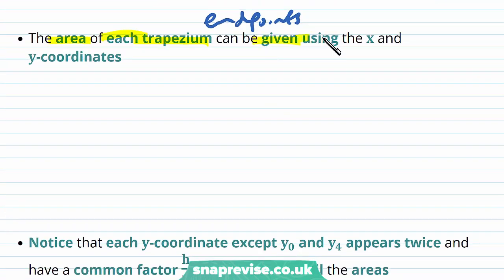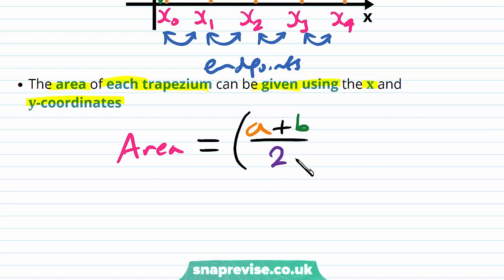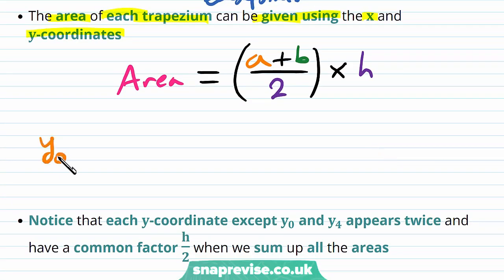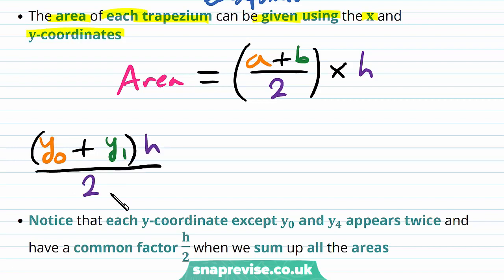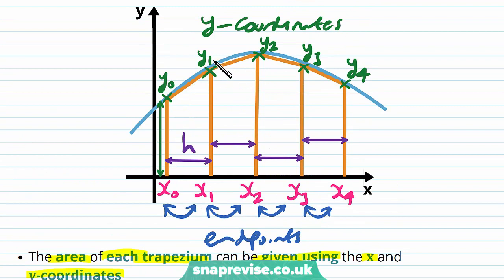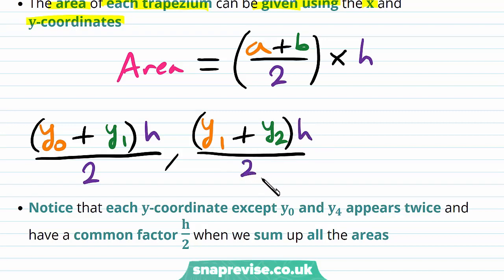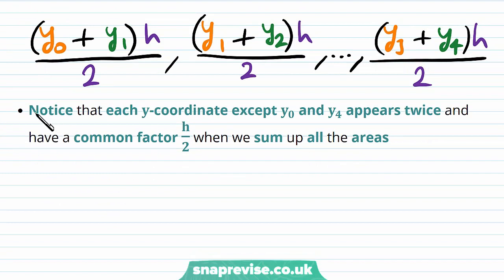The area of each trapezium can be given using the x and y-coordinates. In general, we find the area of a trapezium by adding the two lengths of the parallel sides, dividing by 2, then multiplying by the width h. This gives us (y0 plus y1) over 2 multiplied by h for the first trapezium. Then (y1 plus y2) multiplied by h over 2, and so on up to the last one: (y3 plus y4) multiplied by h over 2. Notice that each y-coordinate except y0 and y4 appears twice and shares a common factor of h over 2 when we sum all the areas.